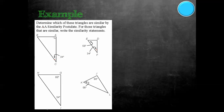Looking at triangle DEF, we have 34 and 34 — those are the same. Here we have a 56, and here we have a 90, so we're missing some information. We take 34 plus 90, which is 124, then subtract from 180, giving us 56. So triangle ABC has angles 56 and 34, and triangle DEF also has 56 and 34. Therefore, triangle ABC is similar to triangle DEF.